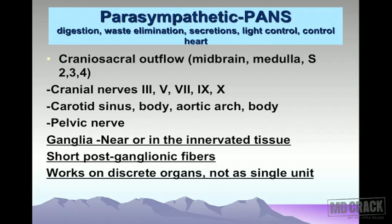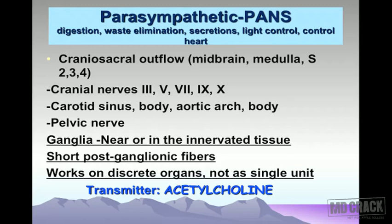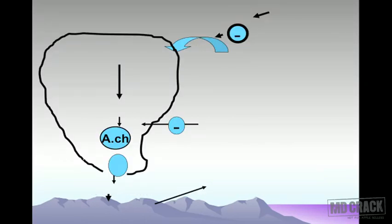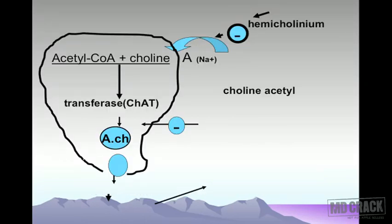This system works on discrete organs and does not work as a single unit. The representative neurotransmitter for the system is acetylcholine — because it ends with 'choline,' we call it the cholinergic nervous system, and its receptors are called cholinergic receptors.